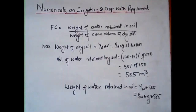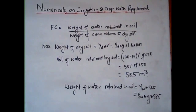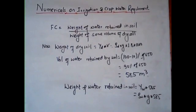The field capacity is defined as the ratio of the weight of water retained in the soil to the weight of the same volume of dry soil. First, we find the weight of dry soil: W = γd × Volume = ρd × g × (area × depth) = 1450 × g × (1000 × 1.8). This gives us the weight of the dry soil.